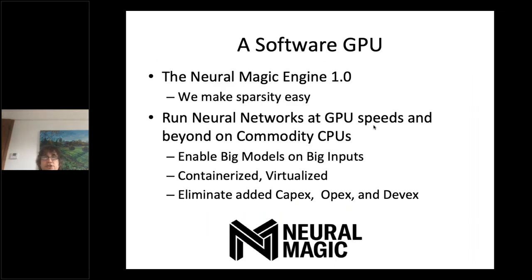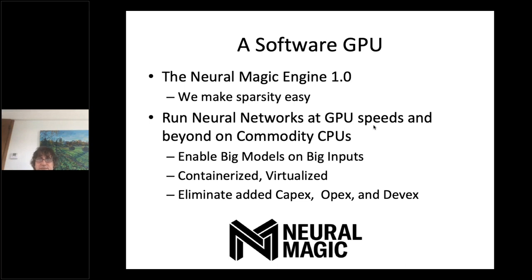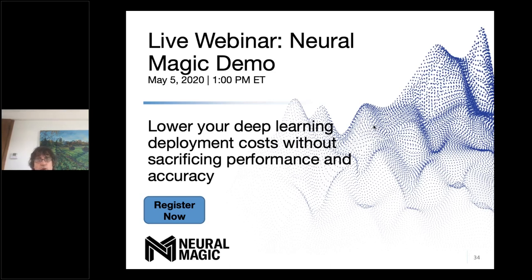This is the 'software GPU' — Neural Magic Engine 1.0, coming out of beta this summer. It makes sparsity easy: sparsify your network and run it at GPU speeds. It enables running big models on big inputs that don't fit in accelerator memory. It's software — containerized, virtualized, move it anywhere. It eliminates the added CapEx, OpEx, and DevEx of special hardware in your data center. There will be a live demo at 1 o'clock today.